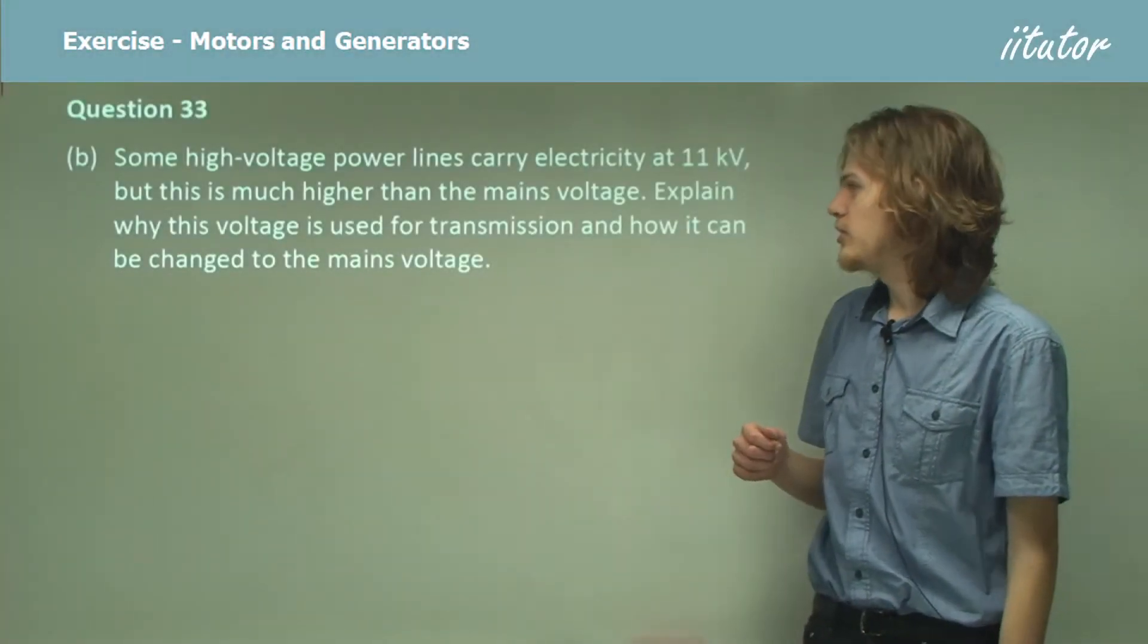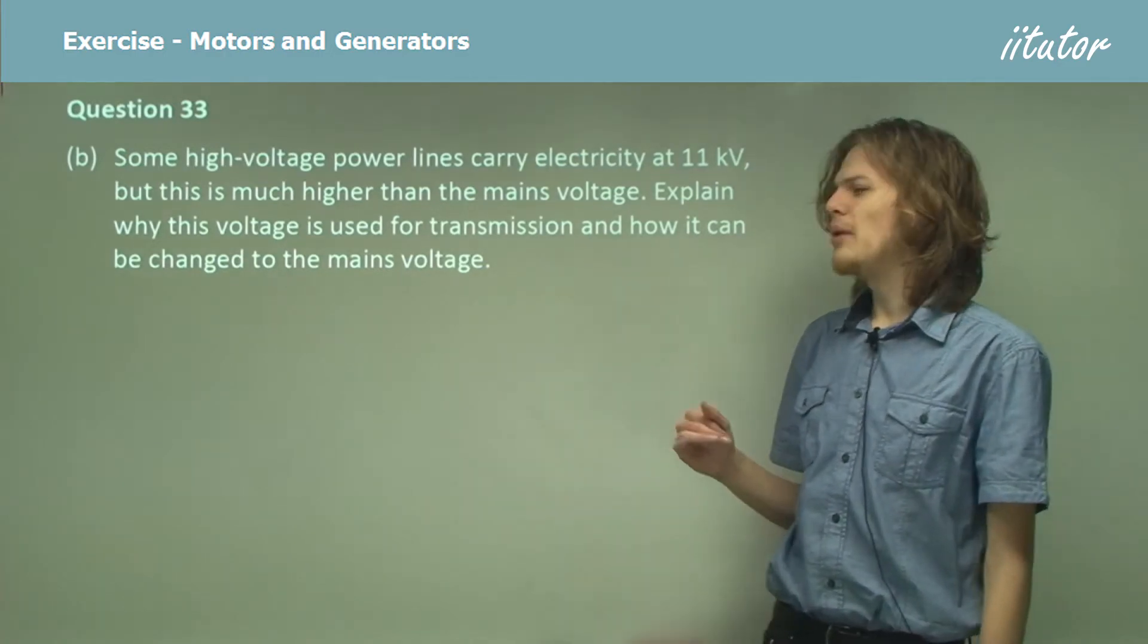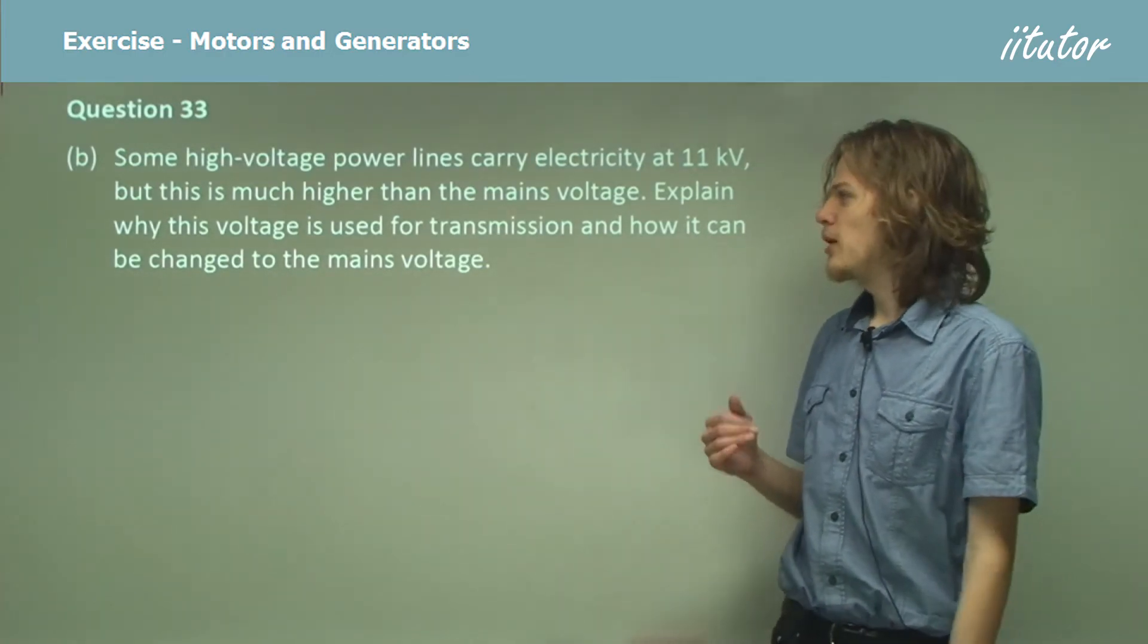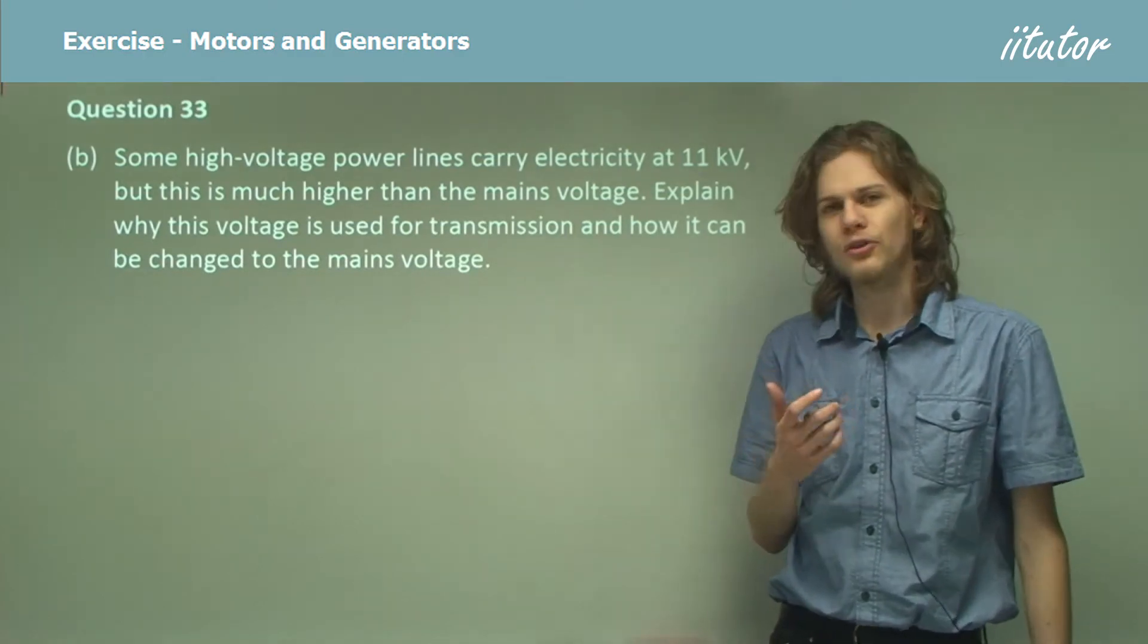Some high voltage power lines carry electricity at high voltages, like 11 kilovolts, but this is much higher than the mains voltage. Explain why this voltage is used for transmission and how it can be changed to the mains voltage.